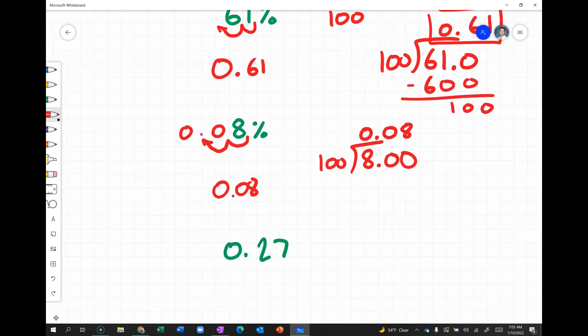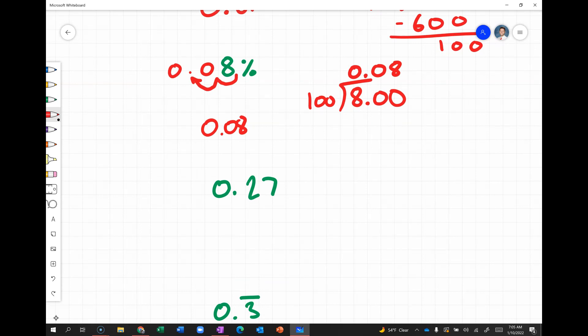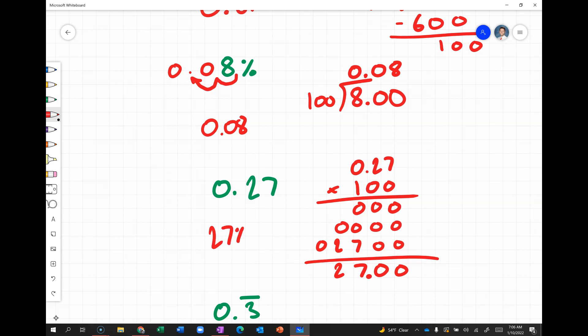Now, going in the other direction, from a decimal to a percent, means multiplying by 100. Because we want to know, what is this out of 100? So, if you were to take 0.27 and multiply by 100, you can see we would get 27%. And you'll realize that multiplying by 100 always just ends up moving our decimal two places. And the reason for that is that multiplying by 100 changes our place value two places.